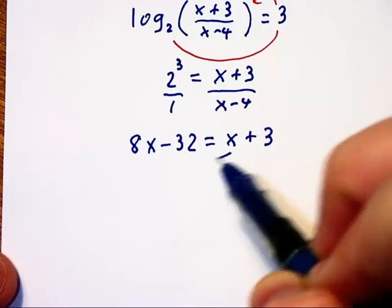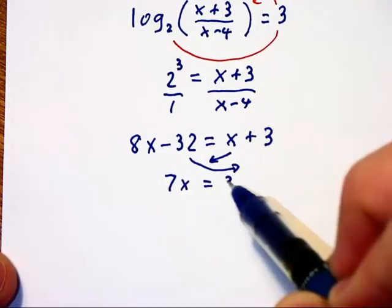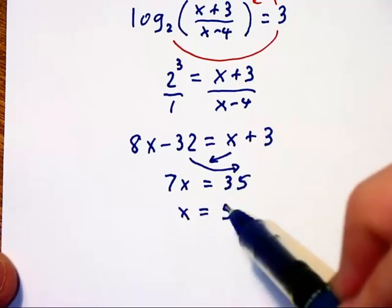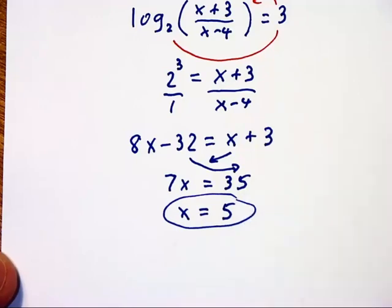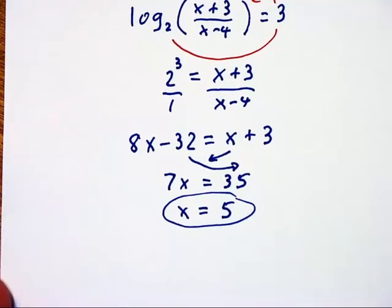If I get all the x's to the left, I have 7x on the left. If I add 32 to each side, I have 35 on the right, so x equals 5. All I need to do is check that 5 does not create the log of a negative, which it doesn't.